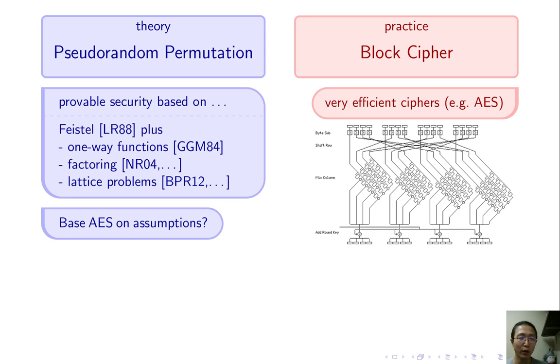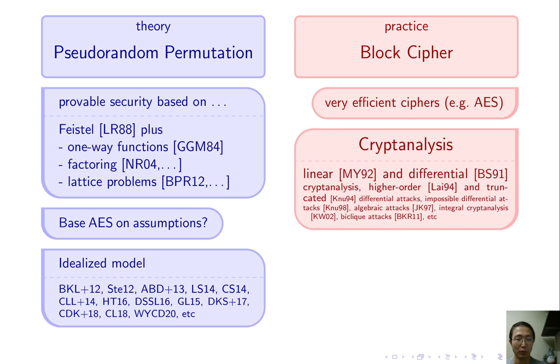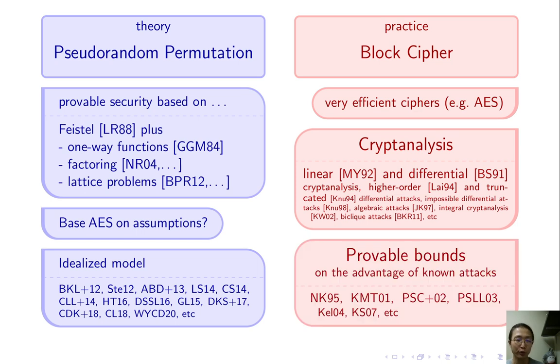The theory work then tries to argue the security of AES or similar ciphers in some idealized models. But still, these works are not analyzing the actual block ciphers. When we get stuck proving security against arbitrary attacks, the next best thing we can hope for is to identify classes of attacks and prove they cannot succeed with good probability.